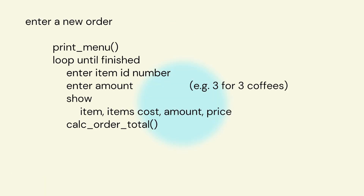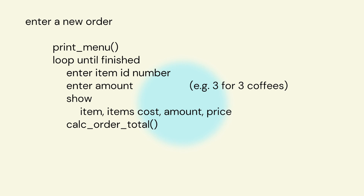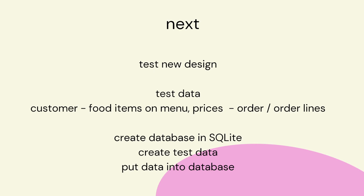For example, entering a new order: we first print the menu, get the items, put in the amount — say three coffees — then show what we're going to order and calculate the order total. We print the details and confirm the order is correct, or update or cancel it. Once we have our design, we need to test it. So we'll create some test data, create a database, and put our test data into the database. That's what we'll be doing in the next video.